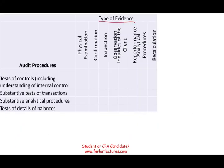The eight types of evidence are: one, physical examination; two, confirmation; three, inspection; four, observation; five, inquiries of the client; six, re-performance; seven, analytical procedures; and eight, recalculation. For the audit procedures, we look at test of control, substantive test of transaction, substantive analytical procedure, and test of detail balances — those are the four types of tests.